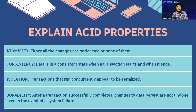Isolation means transactions running concurrently appear to be serialized — one transaction cannot interfere with another transaction. Durability means after a transaction successfully completes, changes to data persist and are not undone even in the event of system failure — once data is stored in a database it is permanently saved, even after a system crash it cannot be removed or changed.